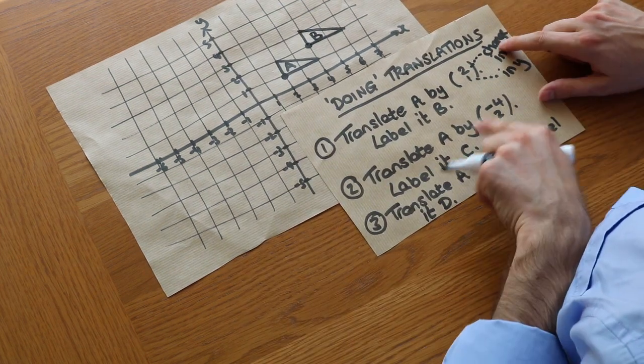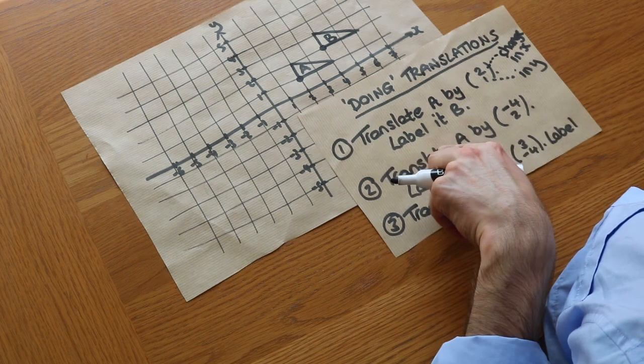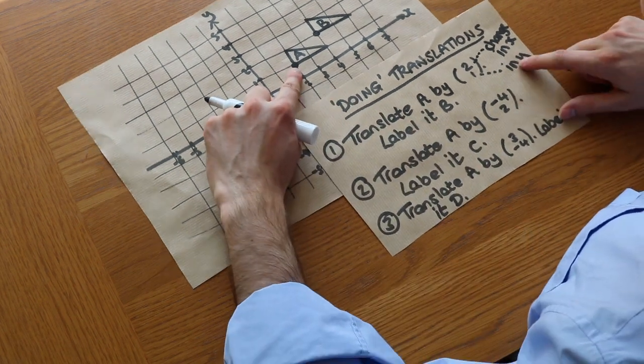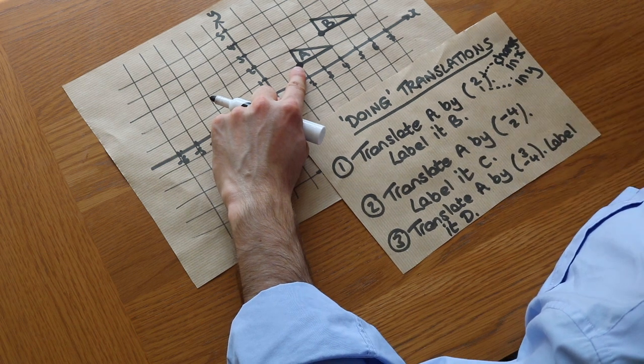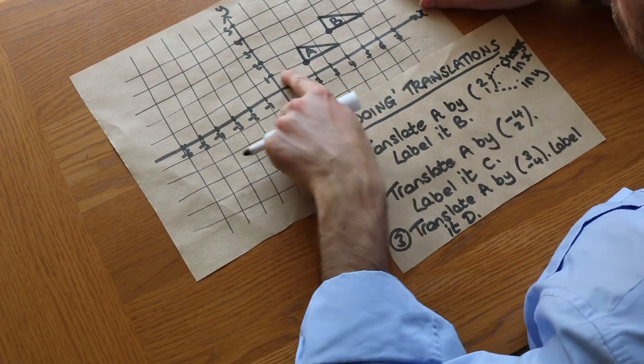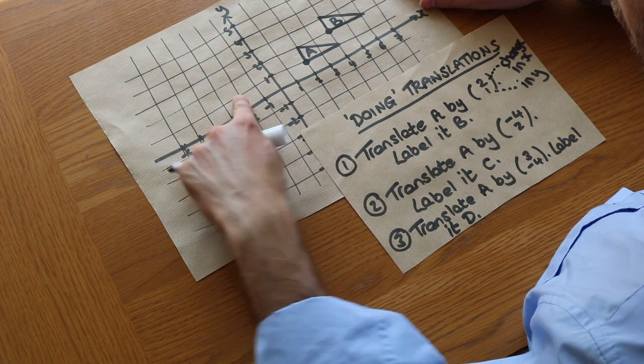What about the second question? Translate A by (-4, 2). So if we take this point again, the X value is changing by -4, so the X value is decreasing by 4. So 1, 2, 3, 4. I'm here.